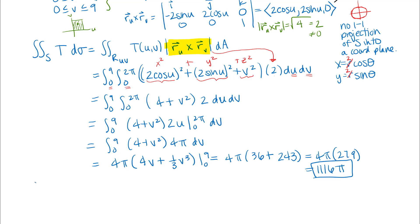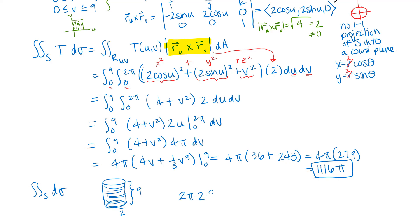For the denominator, I need the surface area of S. Our surface was just a cylinder of radius 2 and height 9 — just the lateral part of that cylinder. So it's pretty easy to write down the surface area: the lateral surface area equals the circumference of the circle times the height, which is 2π times 2 times 9, giving 36π. So to find the average temperature, I divide those two numbers — 1116π divided by 36π — and we get 31 (in whatever the units of temperature are).